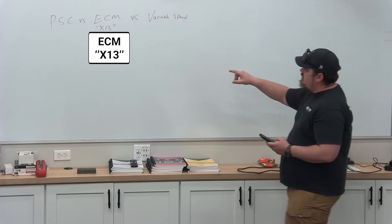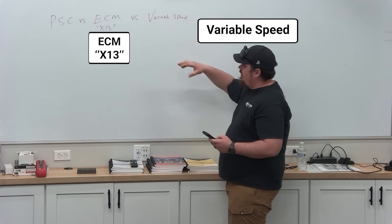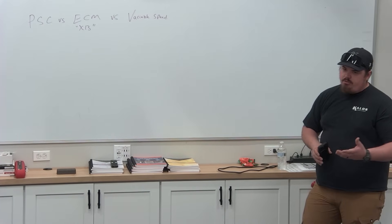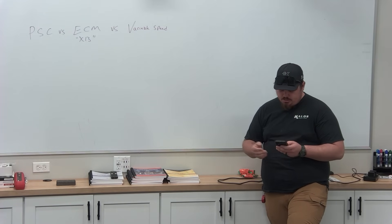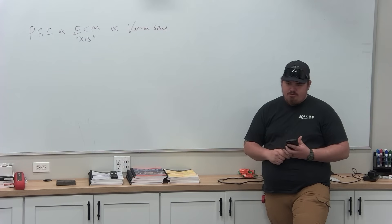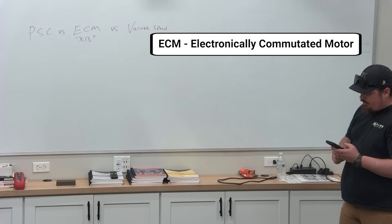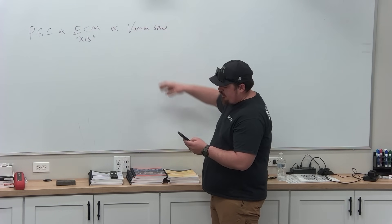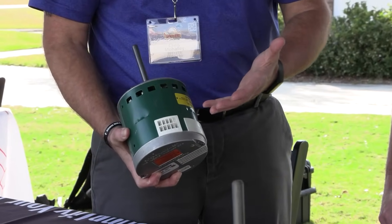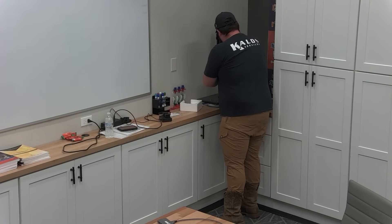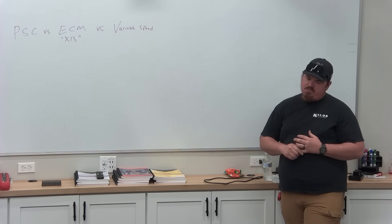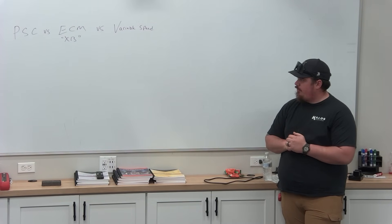ECM motors and variable speed are essentially the same, but they regulate airflow a little differently. The industry standard name for ECM motors has become the X13 — the Gentech motors, the ones we use for all the FJ swap-outs. ECM stands for electronic commutating motor. These motors have internal capacitance built in, and they work off a three-phase system, reversing the plus and minus polarity to actually create blower speed.